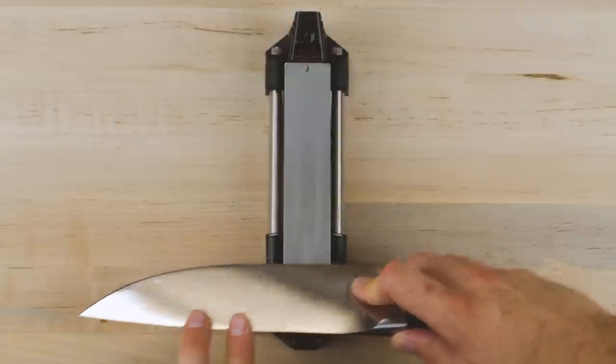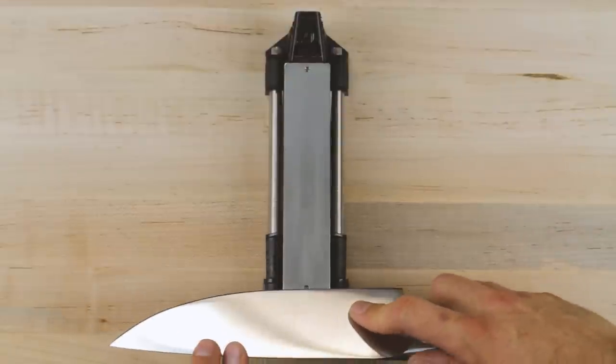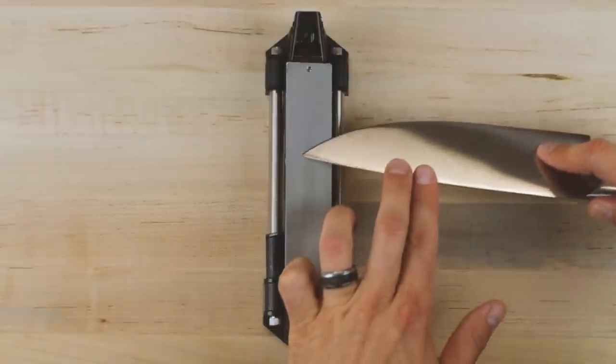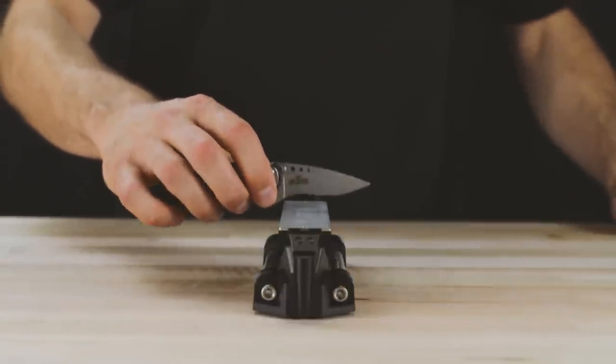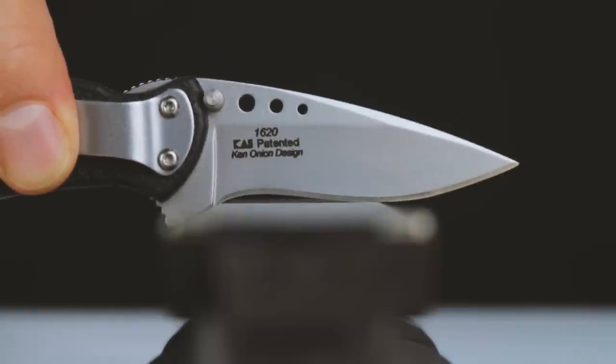The size or profile of your blade may change your sharpening technique. Longer blades like kitchen knives can be sharpened in sections. Recurve blades need to be sharpened differently than other knives since they cannot fully contact the diamond plate.